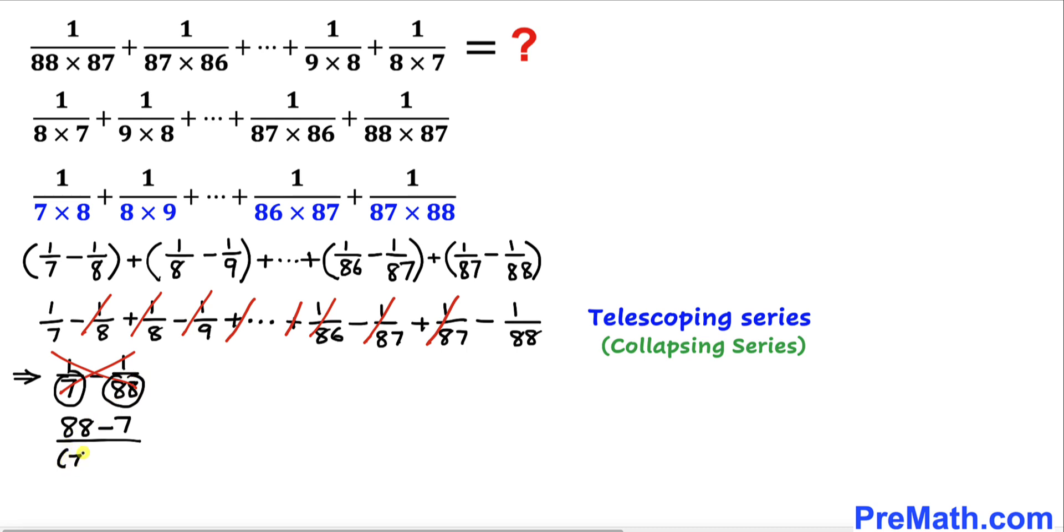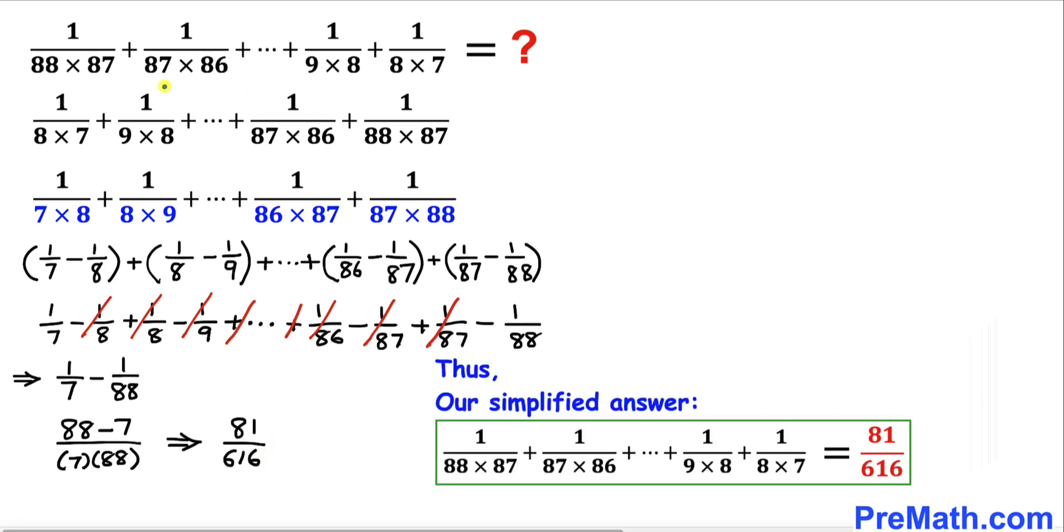Let's simplify this fraction. That gives us 81 as the numerator and 616 as the denominator. Thus, the sum of this given series turns out to be 81 divided by 616, and that's our final answer.